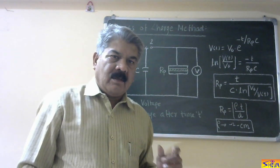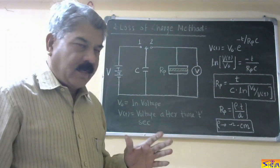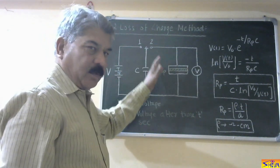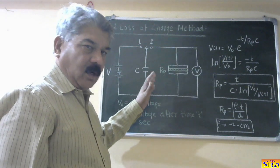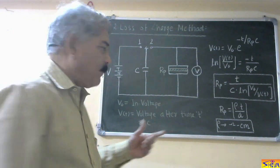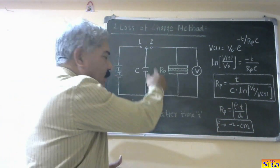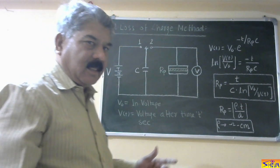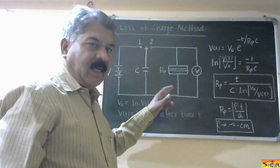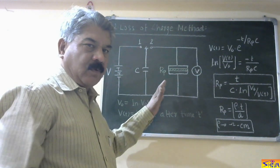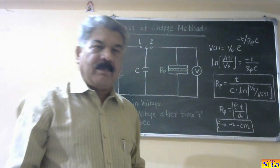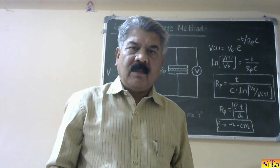However, in this method there is a source of error, because the capacitor also has its own resistance, which we are not accounting for. That capacitor resistance comes in parallel with the test specimen resistance. So the insulation resistance we obtain is actually the parallel combination of these two resistances, introducing some error in the measurement when using the loss of charge method. These are the two methods for measuring the insulation resistance or DC resistivity of the insulation.